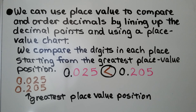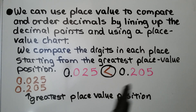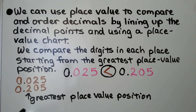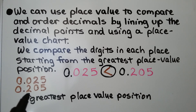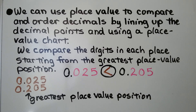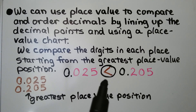We compare the digits in each place, starting from the greatest place value position. We can line up their decimal points when comparing these two decimals and see that the greatest place value position is the tenths place. This has a 2, which is greater than 0, so we know that 0.025 is less than 0.25.